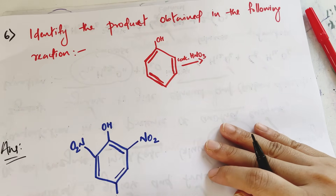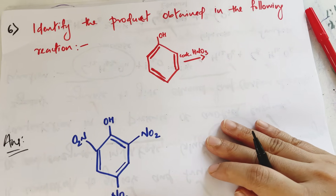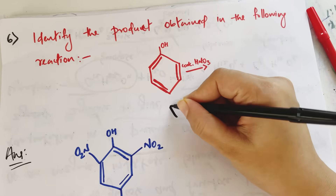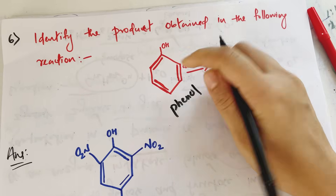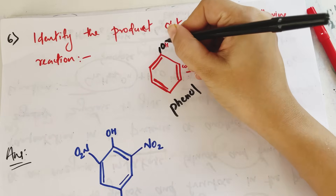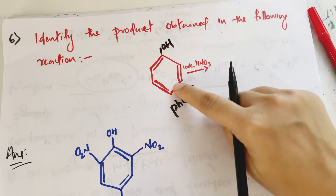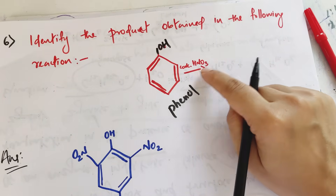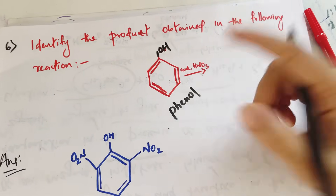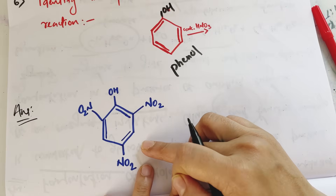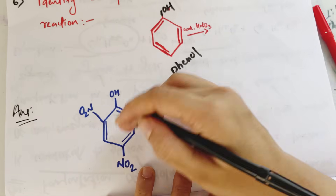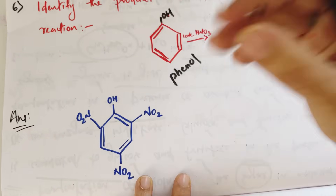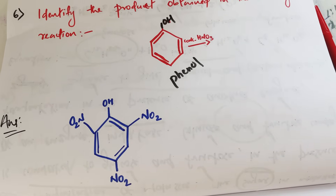Identify the product obtained in the following reaction. In the presence of phenol (benzene ring with OH) and concentrated HNO3, you get picric acid (trinitrophenol).